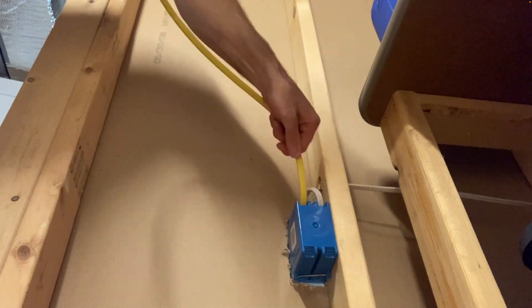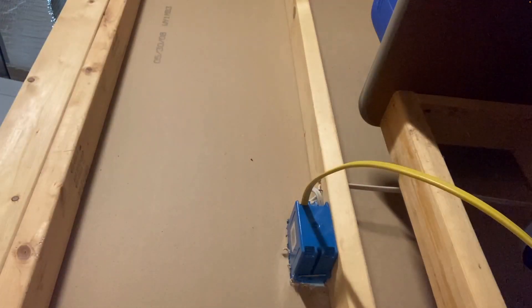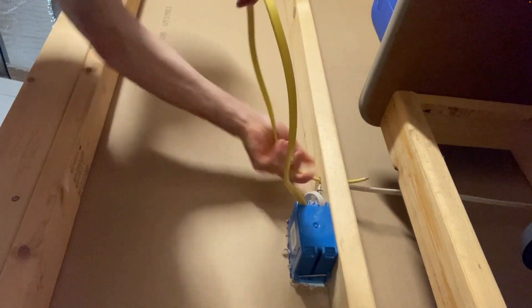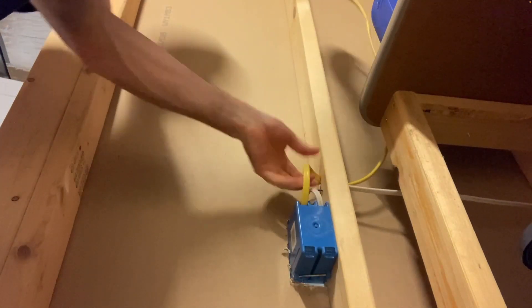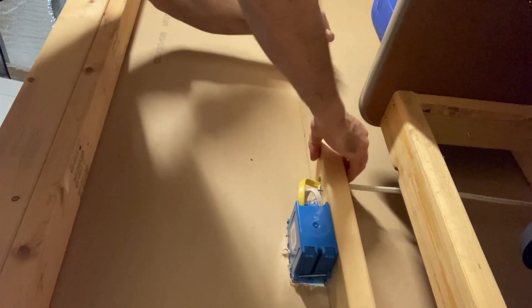On the other side of the wall, we'll feed our Romex through that existing box. Make sure I leave enough sticking out of the wall, and then we'll run it up to the location where I want it, a little bit higher up on the wall on this 2x4 stud.